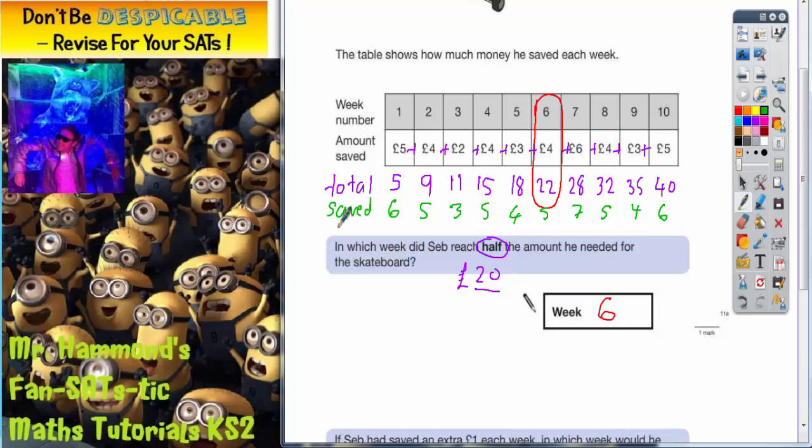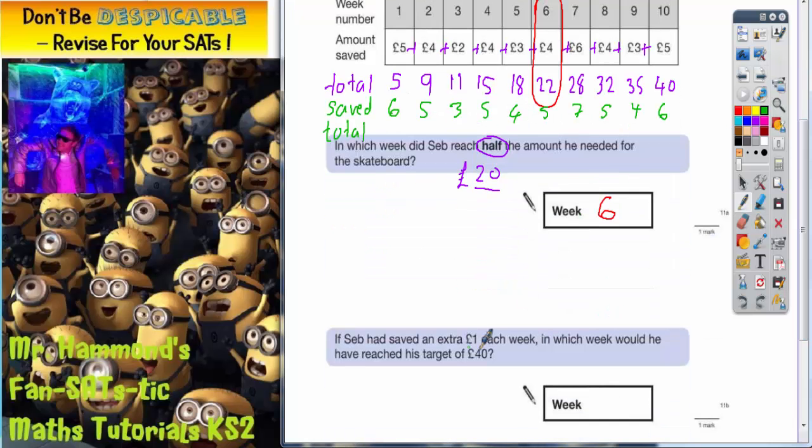So we're going to do the same again. This time do a running total and see when he actually gets the target of £40. Because this time he's asking us about £40.